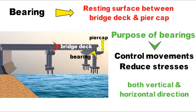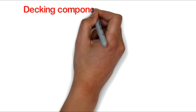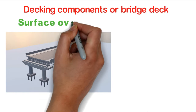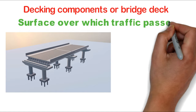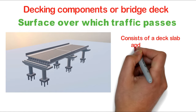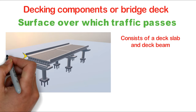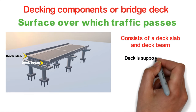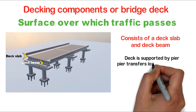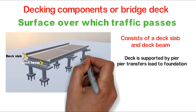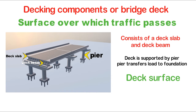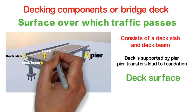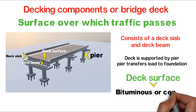Next are the decking components or bridge deck. The bridge deck is the surface over which traffic passes. It consists of a deck slab — the surface over which traffic passes — supported below by deck beams. The deck beam is supported by the pier, which transfers the load to the foundation. The deck surface will be bituminous or concrete depending on the type of finish. It also includes handrails or parapets, and there will be expansion joints between two spans.